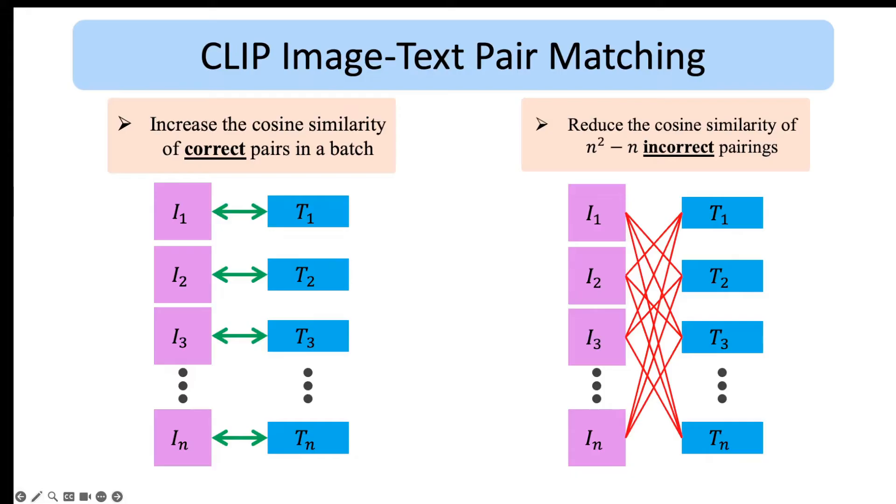But there are also n squared minus n incorrect pairs. The goal here is to make the representations for the correct pairs similar and the representations for the incorrect pairs dissimilar.